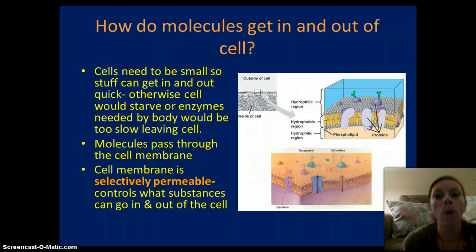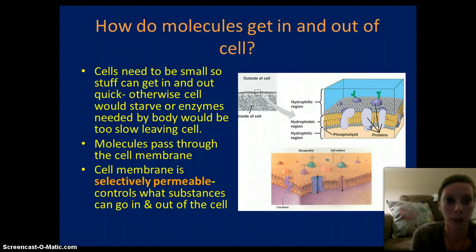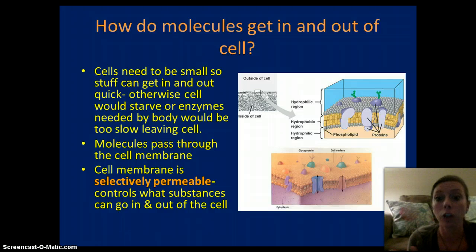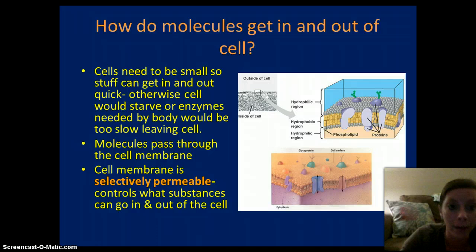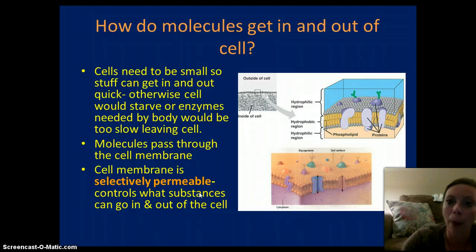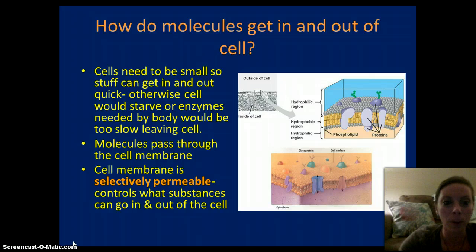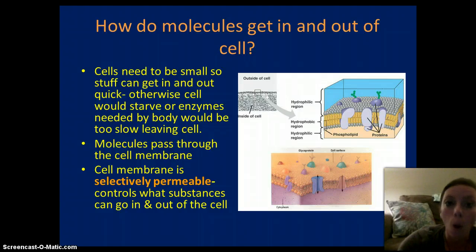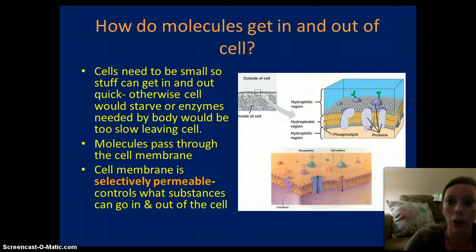So now we're going to focus on cellular movement — how things get into and out of cells. Cells are small, and they have to be small because of the surface area to volume ratio. Cells need to be small because materials need to get into and out of the cell very quickly, the DNA needs to control the cell, and we need enzymes that function properly within the cell. And they need to be small for this purpose. So, the cell membrane is selectively permeable — that means that things can go into and out of the cell, but only particular things. The cell chooses what goes in and out based on the structure of the substance.